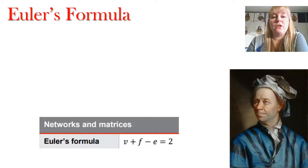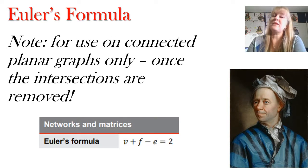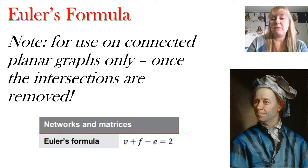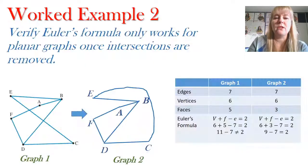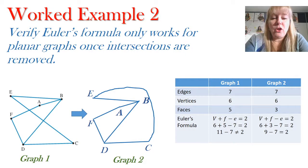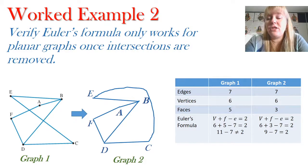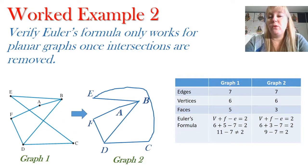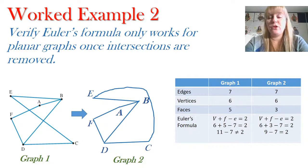It's important to note that we can only use Euler's formula on connected planar graphs once we've removed the intersections. If a graph has intersections, those intersections create extra faces, so we need to remove them first before applying the formula. Here's our earlier example where we took graph one and turned it into graph two. If you count the edges, vertices, and faces for graph one — the planar graph before redrawing — it doesn't work with Euler's formula. But once the intersections are removed in graph two, the formula works.